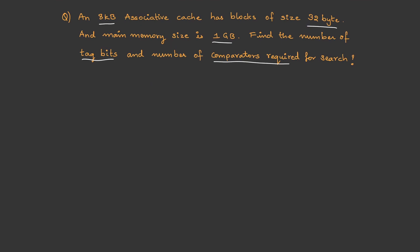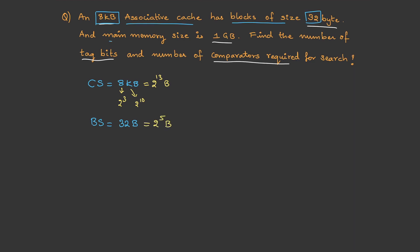To solve this, let's write the given data. It is an associative cache. Cache size is 8 KB = 2³ × 2¹⁰ = 2¹³ bytes. Block size is 32 bytes = 2⁵ bytes. Main memory size is 1 GB = 2³⁰ bytes.